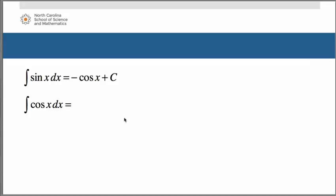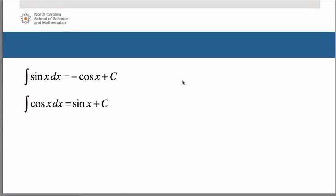Let's consider the cosine function. For the antiderivative of cosine of x dx, think to yourself: what can I take the derivative of and get cosine as my answer? If you take the derivative of sine, you know that to be cosine. Therefore, the antiderivative of cosine of x dx is sine of x plus c.